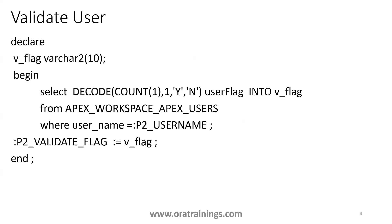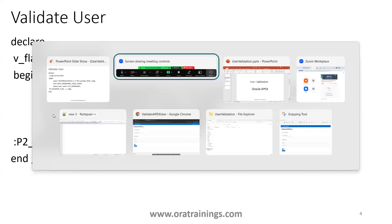The second method is how we validate whether a particular username is valid or invalid. In Oracle Apex we have a table called apex_workspace_apex_users. In a given workspace, if a username is valid it has to be available in this table; if it is not available, it is invalid. So using this logic we check: if the query provides Y it is valid, if it provides N it is an invalid user.